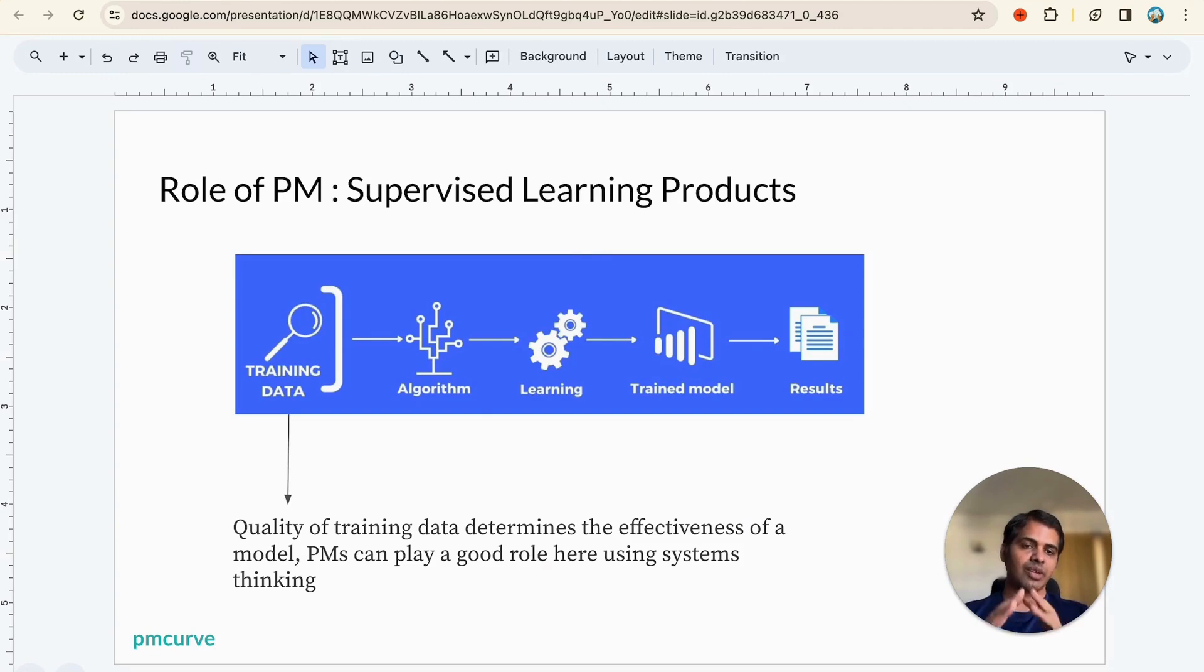Now that we have understood how supervised learning works, which is basically you give set of label data or training data to the model, the model learns, and then we take some testing data and feed it to model and see the output. That's how we gauge whether we have got a good supervised model versus a bad supervised model.